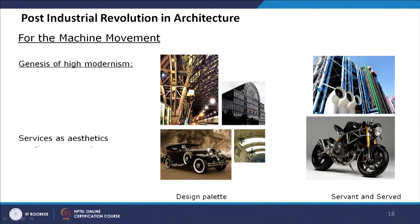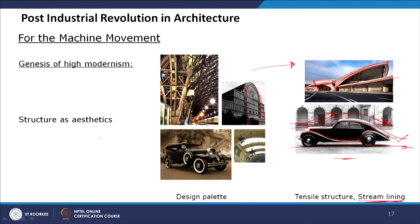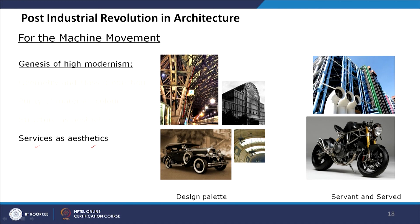Another theme is services as aesthetics. Looking at the structure of a car chassis left exposed to create the car's form. Looking at all the services — rainwater pipelines and everything — exposed, this was translated into the Pompidou Centre in Paris. All the services are colour-coded to accentuate their presence and exposed on the building facade, which became the building's style. Even the nude bike design shows structural and service elements as visible — connecting back to the for-the-machine movement.